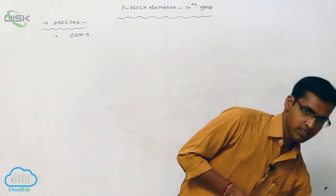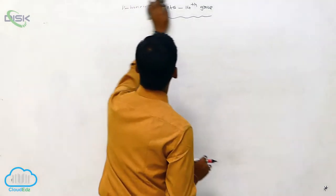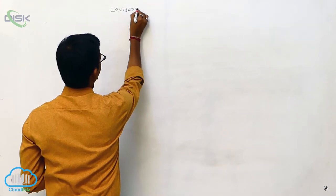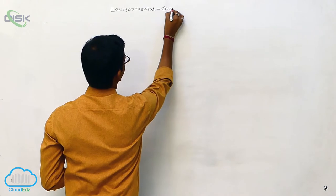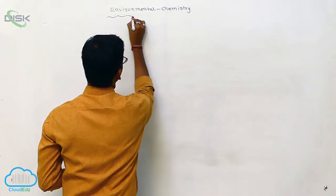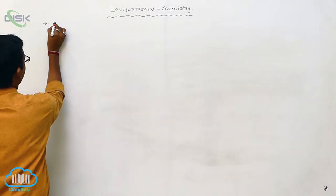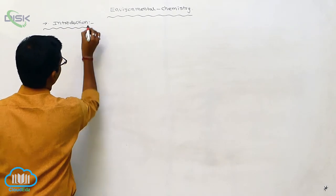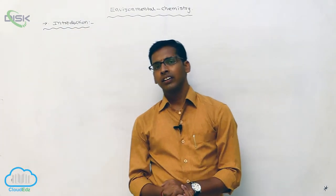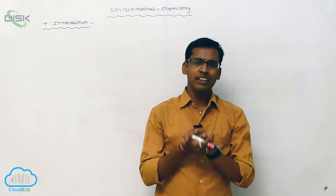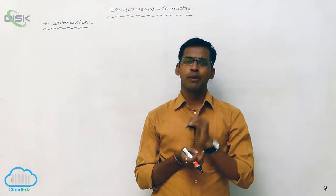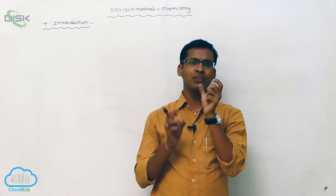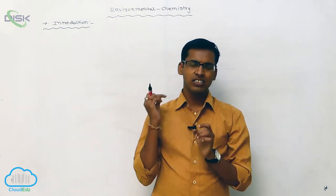Next one we discuss a new topic that is environmental chemistry. This is a new chapter environmental chemistry. The environment science is correlated with social economics, physical, chemical. This topic is correlated with various branches. That is what it is called as environment studies.